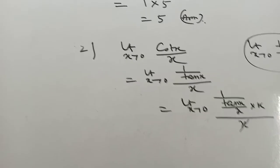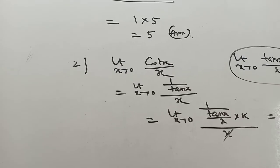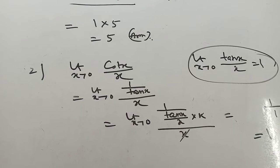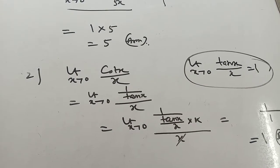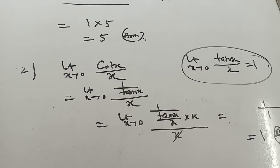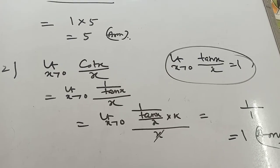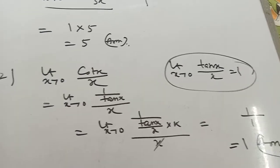Because cot x equals 1 by tan x. Now you arrange it: limit as x tends to 0, tan x by x times x. I adjust it. That means this and this cancel. Then I will get the original sum. That means the limit - this is 1, and x and x will be cancelled. That means this is 1.